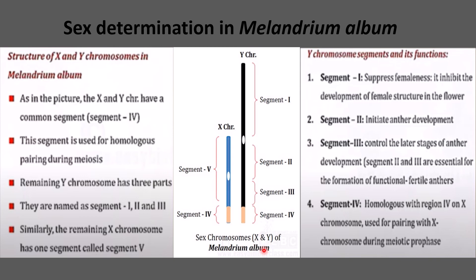The structure of the X and Y chromosomes in Melandrium album shows that the X chromosome is shorter than the Y chromosome, which is long and conspicuous. These two chromosomes have two distinct regions: a homologous region (segment 4), present in both chromosomes and used for pairing during meiosis, and differential regions containing the remaining segments.